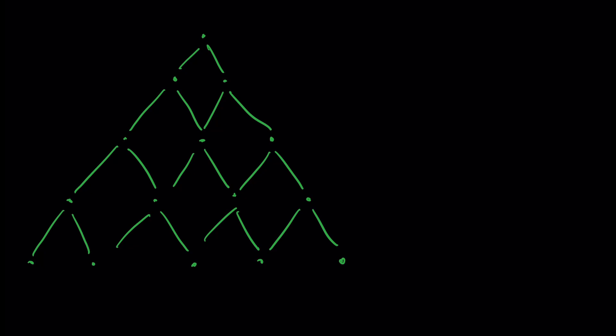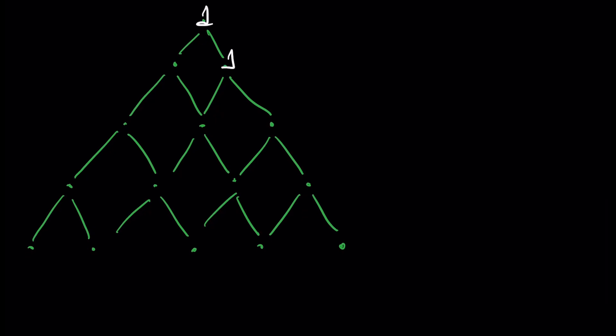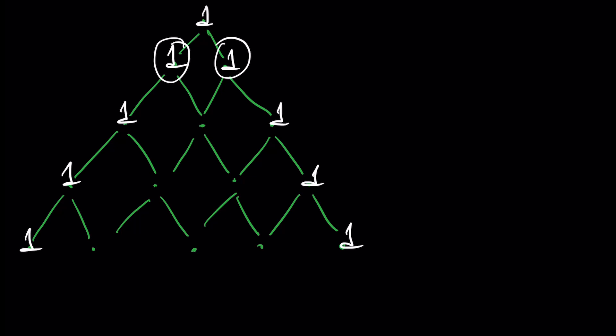Next we write the number one at the corners of our pyramid, so we write one on the left corner and one on the right corner of each row. To fill the empty interior nodes — for example, how do we find the number in a given node — we take the two numbers just above that node and write their sum. Since 1 + 1 = 2, we write 2 here.